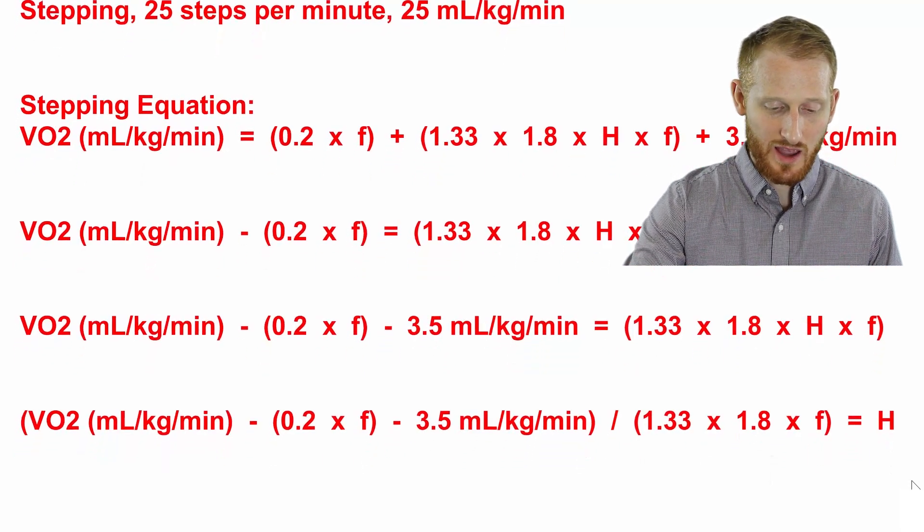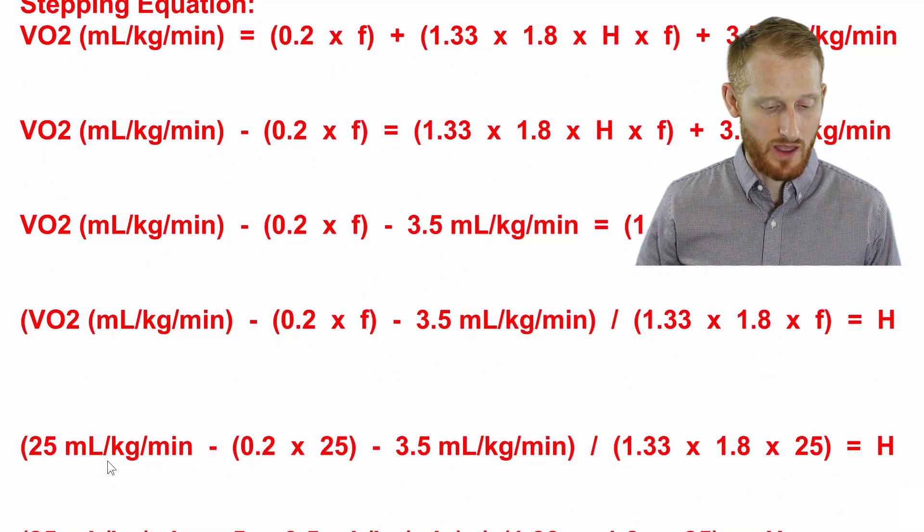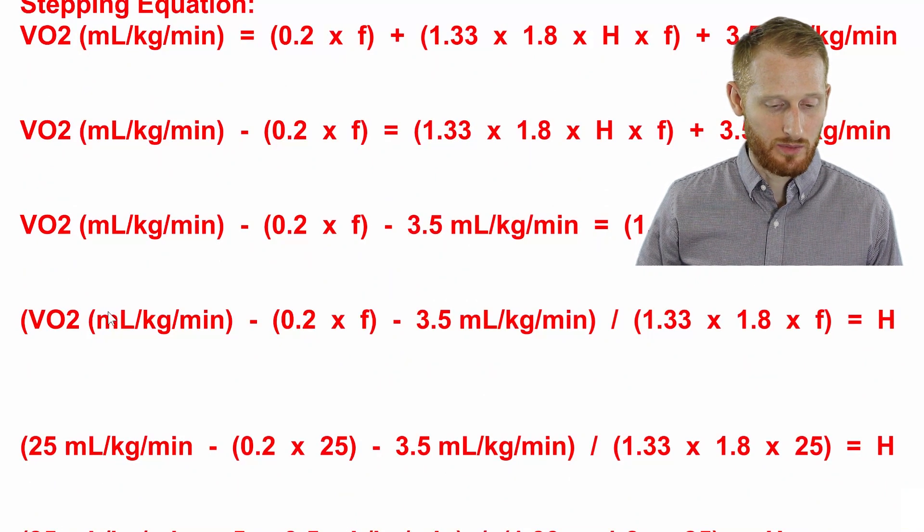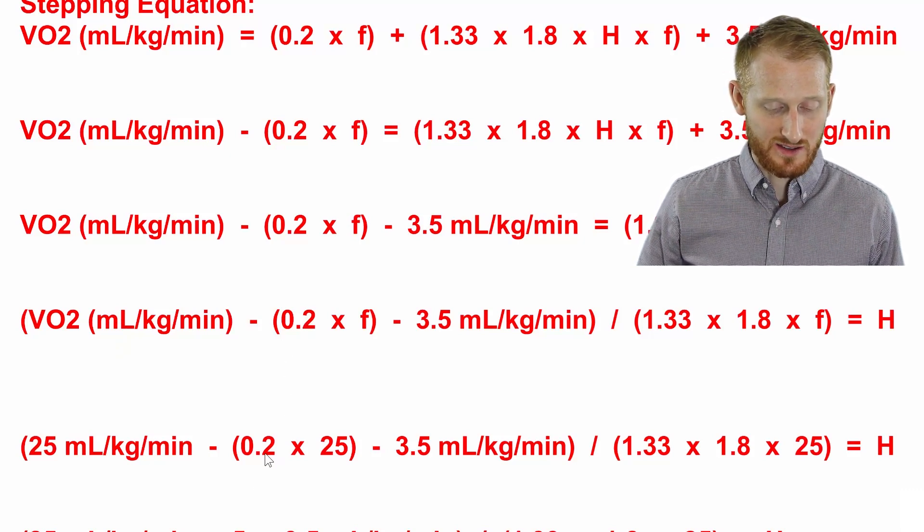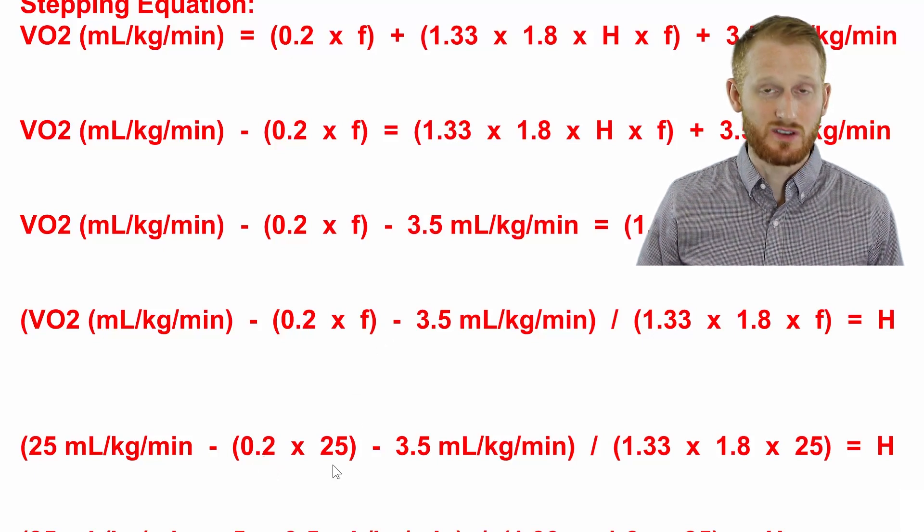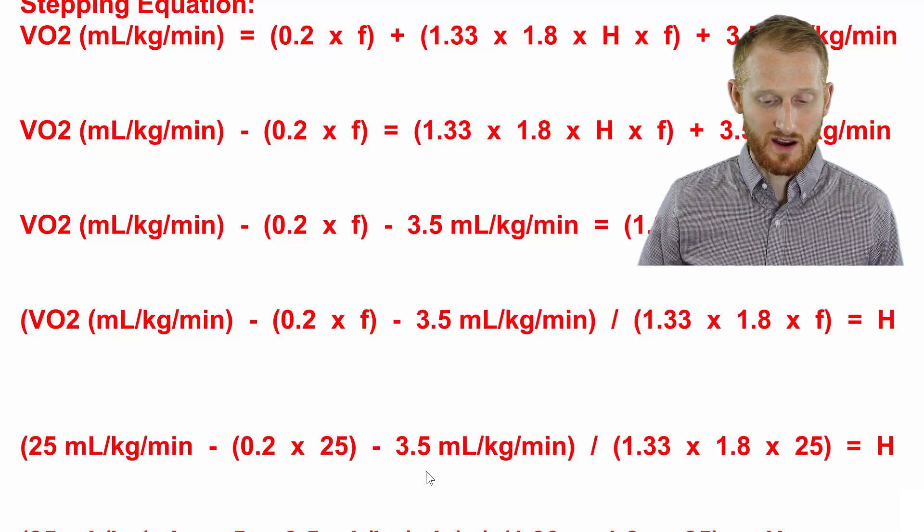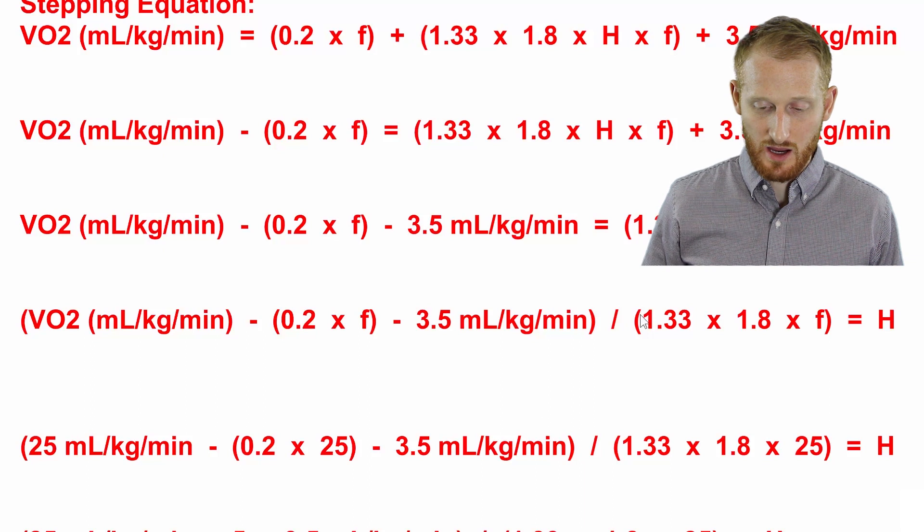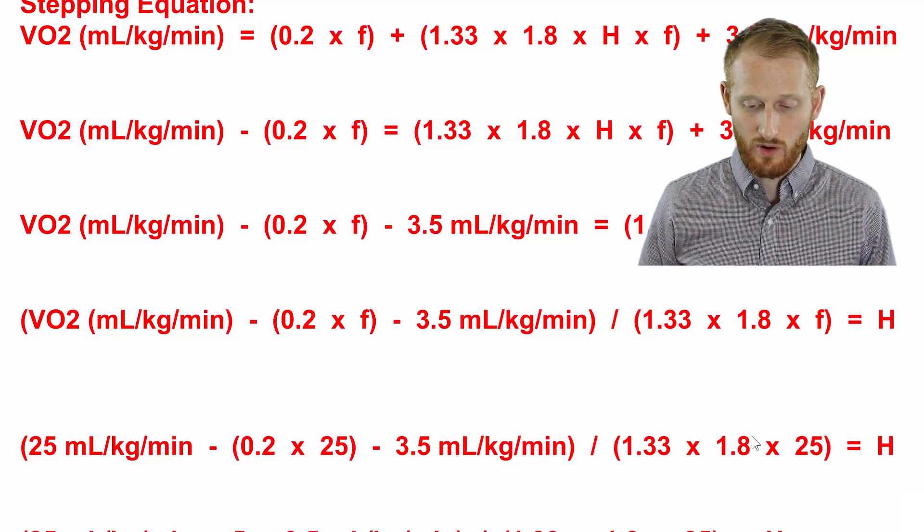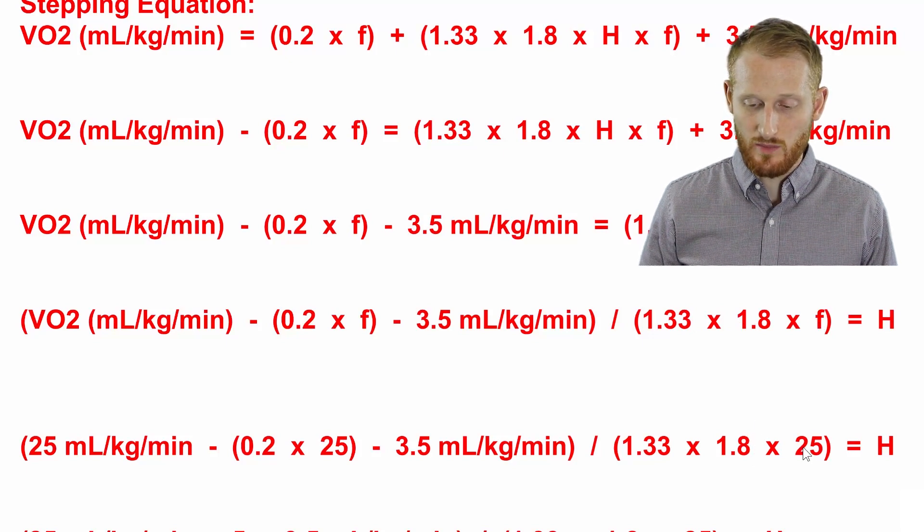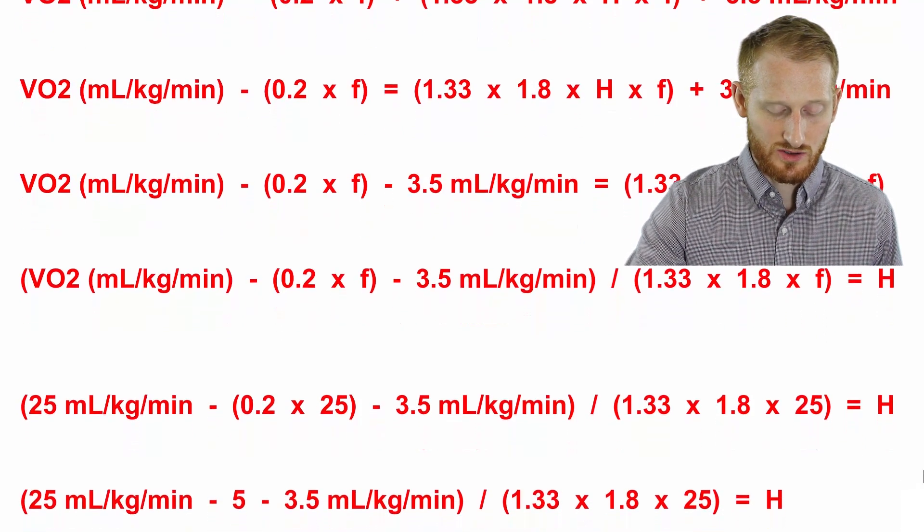So let's go ahead and plug in our values. We have 25 mL/kg/min that we're going to plug in for the oxygen consumption rate. We still have the 0.2 here, that's a constant. The frequency is going to be 25 steps per minute, so we're going to plug in 25 here. We have the minus 3.5 for the resting components. Dividing all this by 1.33 times 1.8, both of those are constants, and multiply that by the frequency, again, 25 steps per minute. And so we're going to start doing this.